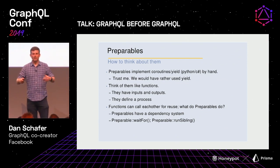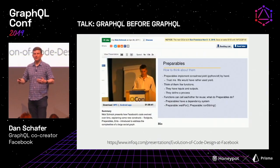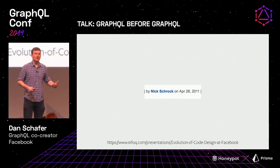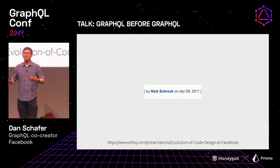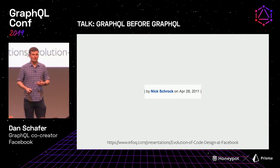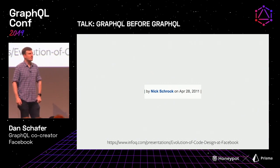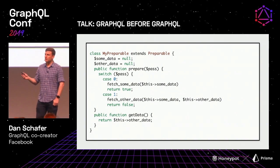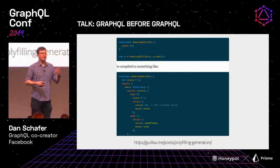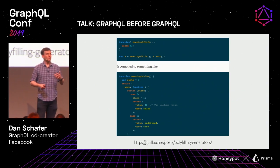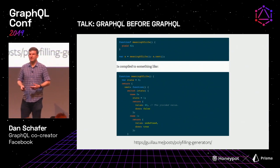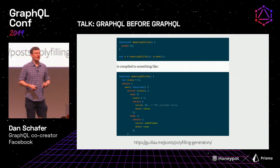That talk was given by Nick Schrock in 2011, covering a lot of what I'm discussing here. GraphQL didn't emerge from a primordial void — it emerged from these problems we were solving in Facebook server architecture. Going back to Preparable: unless you worked at Facebook this probably looks unfamiliar, with one exception. If you ever used Regenerator, which allowed function stars in JavaScript and compiled them into something that didn't use function stars — the output looked a lot like Preparable. That's not a coincidence. Preparable was essentially a way of implementing generators when you didn't have them in the language.